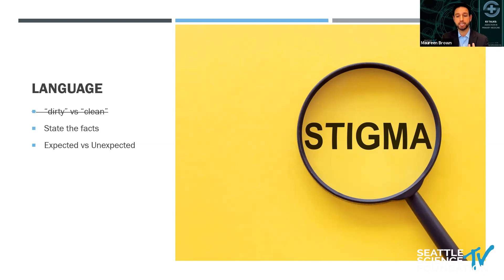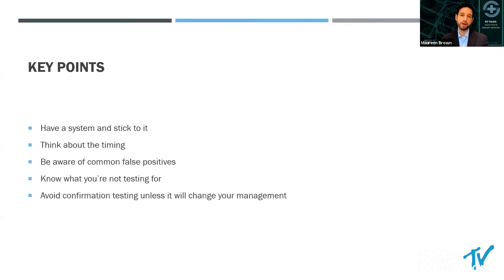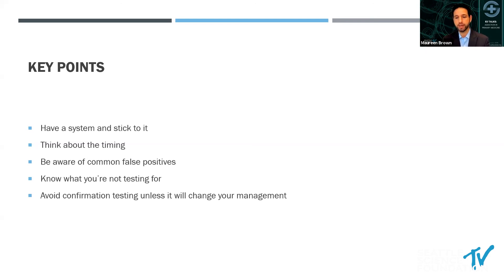Key points to close with: have a system for when you're testing, stick to it, and be consistent in how you're responding to outcomes for all of your patients. Think about the timing — does it make sense with their history? Be aware of common false positives, have a table you can rely on, and screen a patient's medication list. Know what you're not testing for — especially with benzodiazepines and opioids. And avoid confirmation testing unless it's going to change your management, and save that money.